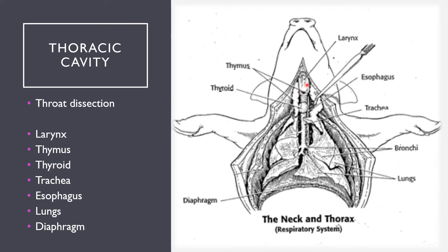The larynx is commonly associated with producing noise, such as in the voice box in humans. You have the thymus and the thyroid right here and here. The thymus is a gland that runs on either side of the larynx, and the thyroid generally sits right on top of the trachea. Both are glands — the thymus aids with the immune system while the thyroid aids the endocrine system.